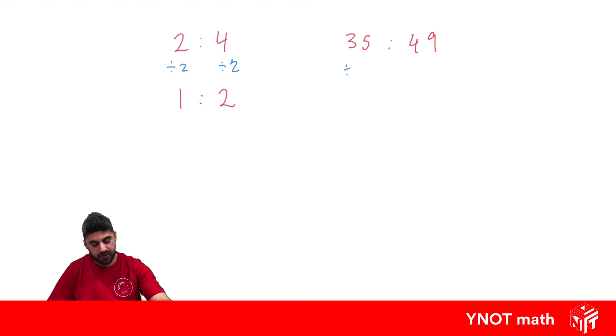So they can both be divided by 7. 35 divided by 7 is 5. And 49 divided by 7 is 7. And that's the most simplified ratio for the ratio 35 to 49.